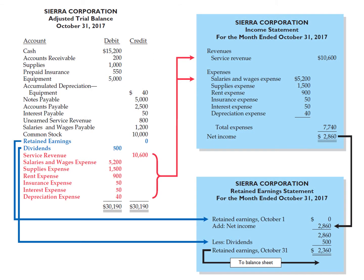This slide shows the relationships between the data in the adjusted trial balance and the corresponding financial statements. Companies prepare the income statement from the revenue and expense accounts. They prepare the retained earnings statement from the retained earnings account, the dividend account, and the net income or net loss shown in the income statement.